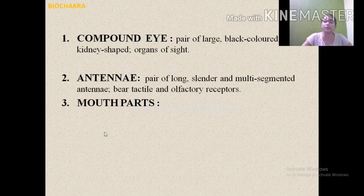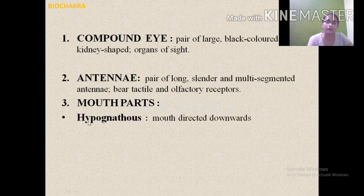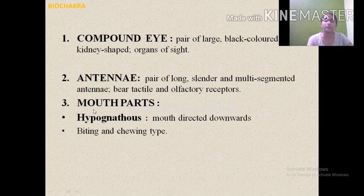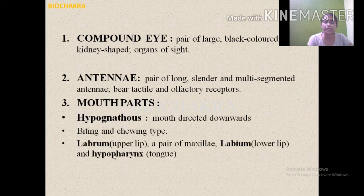The mouthparts are downward-directed — this condition is called hypognathous. The cockroach has biting and chewing type mouthparts. The mouthparts consist of: labrum (equivalent to the upper lip), a pair of maxillae, labium (equivalent to the lower lip), and the hypopharynx (similar to the tongue).